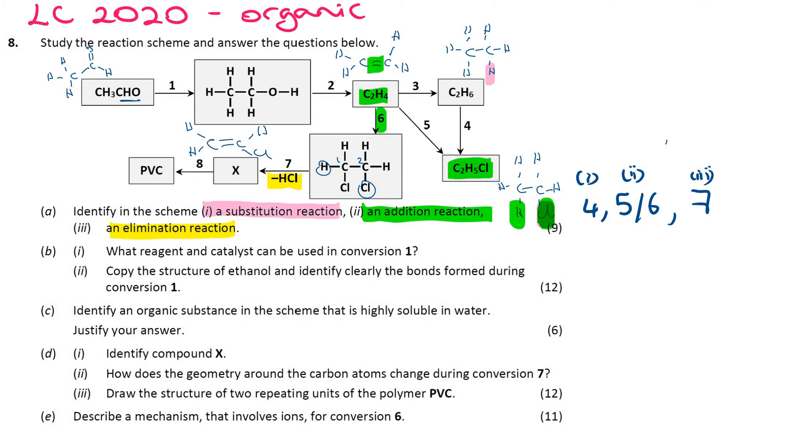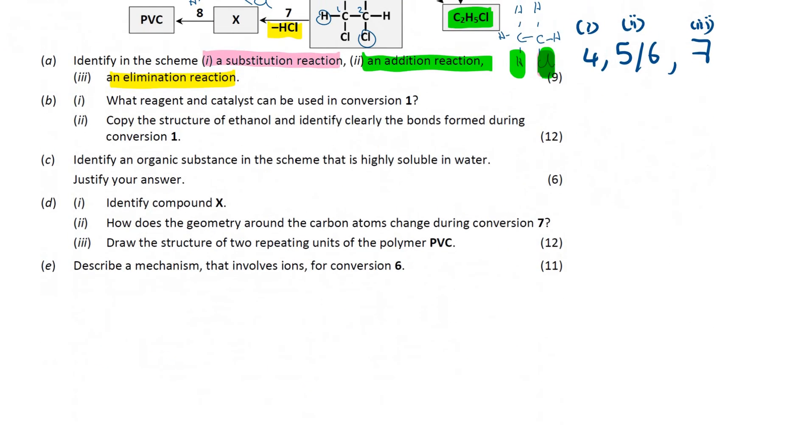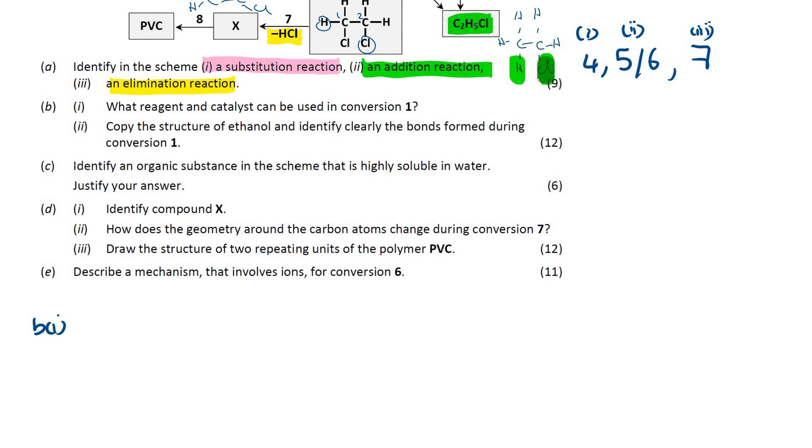What reagent and catalyst can be used for conversion 1? Now, conversion 1 involves the change from an aldehyde to an alcohol. I'll just write some rough work here, B part 1. You're going from that aldehyde to that alcohol. The reagents used for that in B part 1 are hydrogen gas and a nickel catalyst usually.